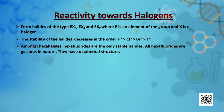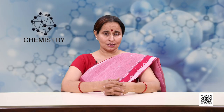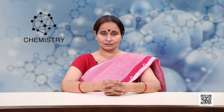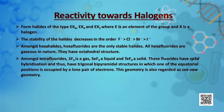All hexafluorides are gaseous in nature and have an octahedral structure. Sulphur hexafluoride is exceptionally stable for steric reasons. Amongst tetrafluorides, sulphur tetrafluoride is a gas, selenium tetrafluoride is a liquid, and tellurium tetrafluoride is a solid. These fluorides have sp3d hybridization and a trigonal bipyramidal structure in which one equatorial position is occupied by a lone pair of electrons.